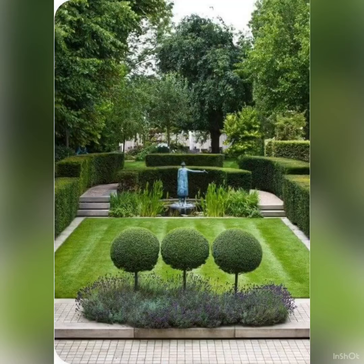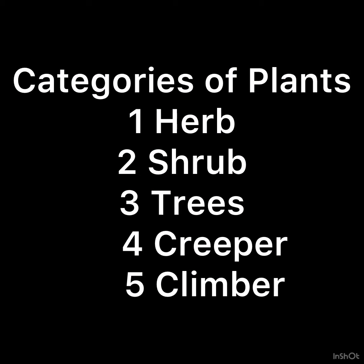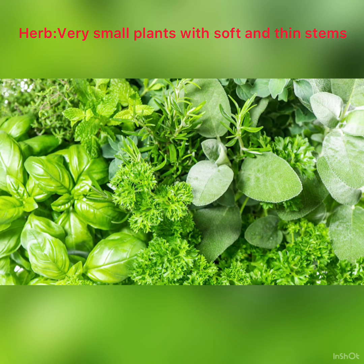When we look around ourselves or go to a garden, we see different types of plants — some are very small, some are medium sized, and some are very big. The very small plants with soft and thin stems are known as herbs. For example, grass, basil, garlic, and spinach.